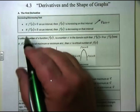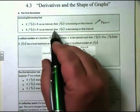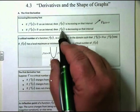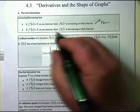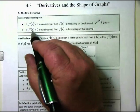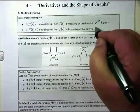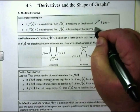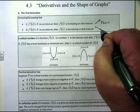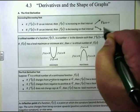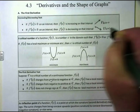Similarly, if f'(x) is less than 0 on an interval, then f(x) is decreasing, because the derivative is the slope of the tangent line — the slope of the tangent line is negative, or going down — so it'll be decreasing where the derivative is less than 0.